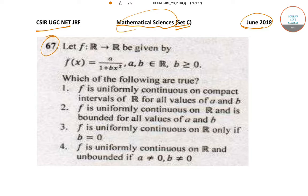Let's start off with question number 67. In question number 67, let f: R → R be given by f(x) = a/(1 + bx²) where a, b belong to the set of real numbers and b ≥ 0.